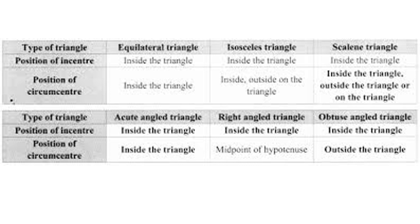For isosceles triangle, scalene triangle, acute angle triangle, right angle triangle, and obtuse angle triangle, you have to draw the incircle and circumcircle of each, check the position of the incenter and the position of the circumcenter, and then fill in the boxes in the table. Only by doing the construction yourself can you fill in these boxes.